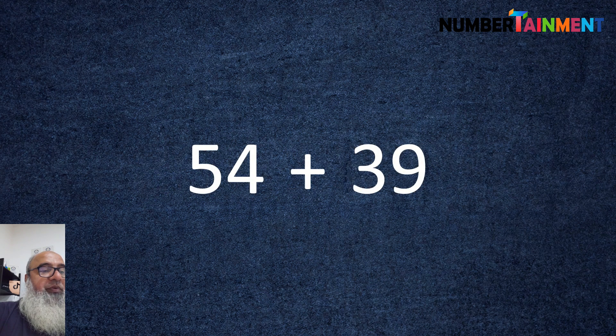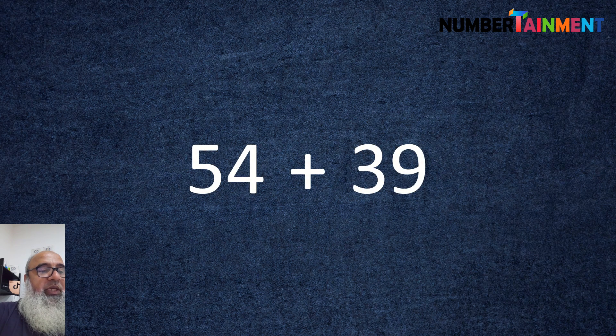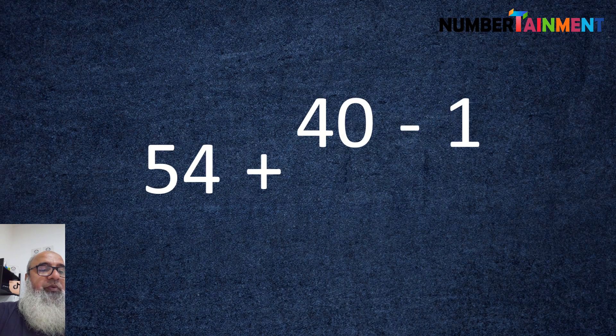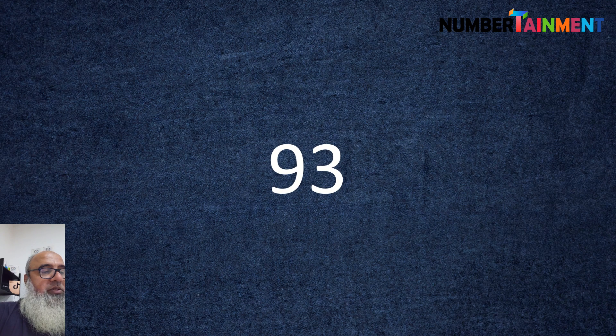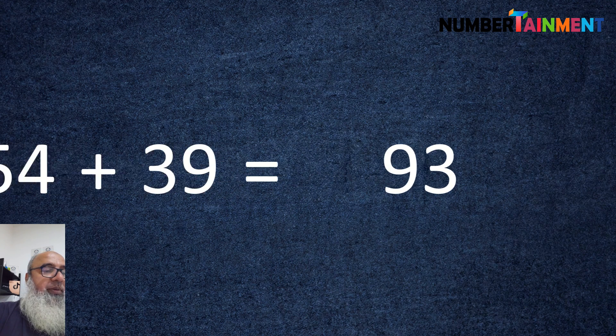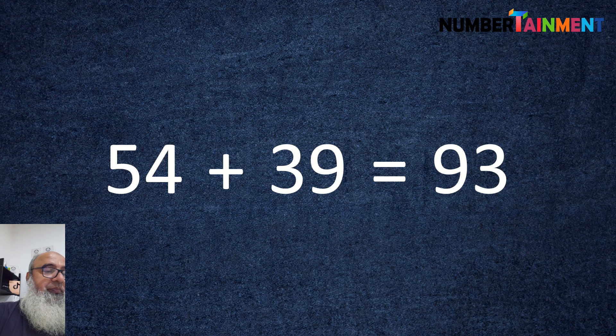And to find 54 plus 39, we can add 40 to 54 and take 1 away to get 93. So 54 plus 39 is equal to 93. In a similar way,